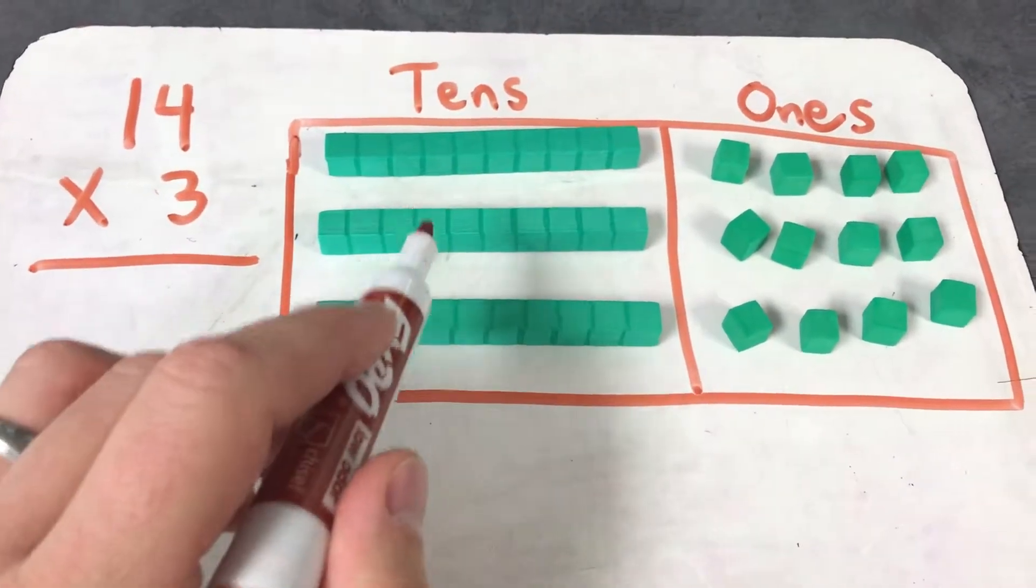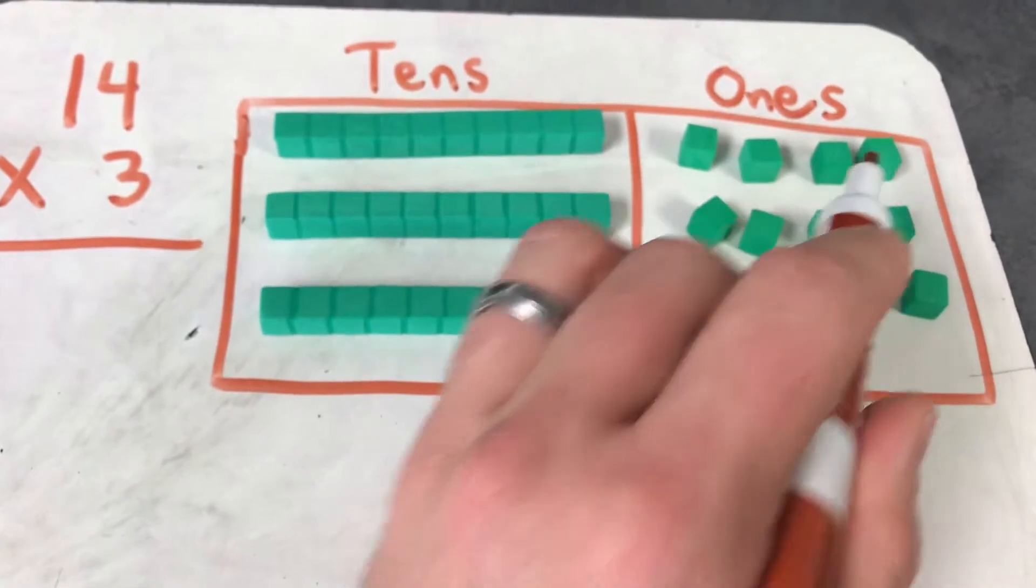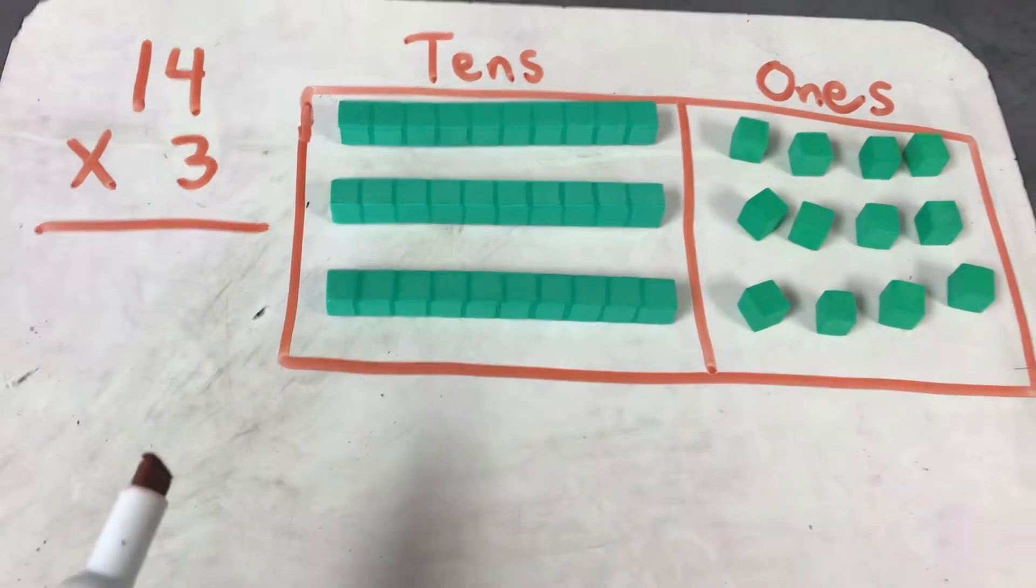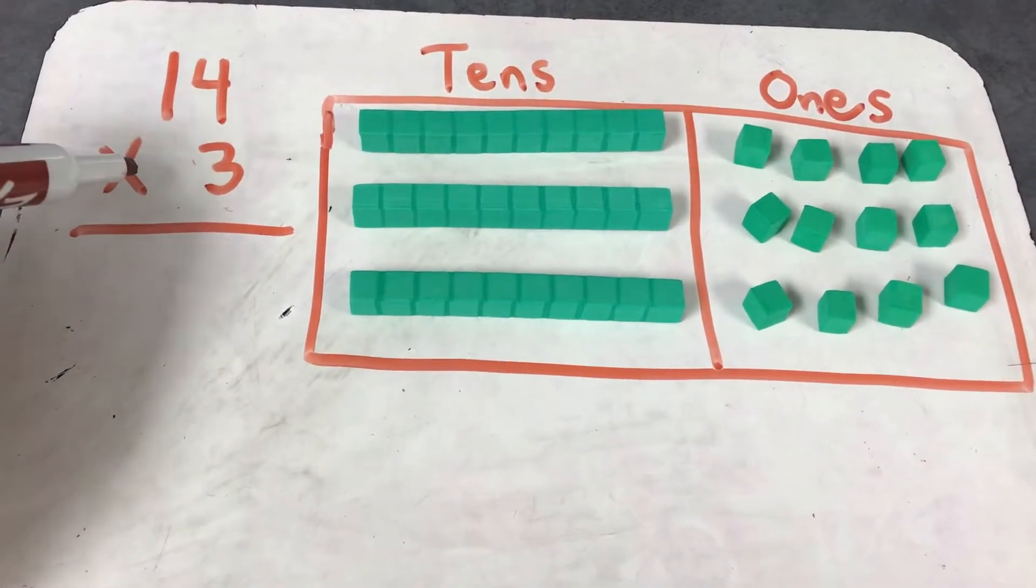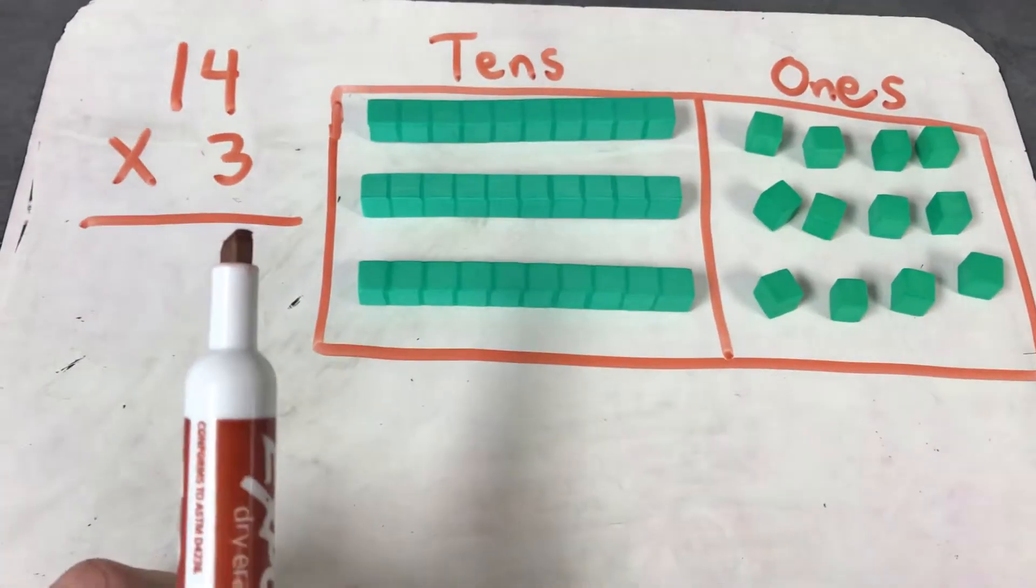So what I've done over here is I've got our base ten blocks. I've got ten, eleven, twelve, thirteen, fourteen, and then I have that a second time and a third time. And what I'm showing the kids here is this is an array of fourteen by three. We have fourteen three times. That way we can actually see it.